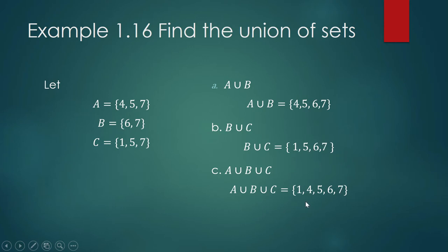Remember, we do not repeat the listing of elements. Also, the order in which we write down the elements does not matter — it does not affect the identity of your set. We can jumble the listing of these elements and it is still equal to the same set union.